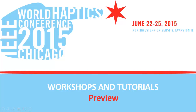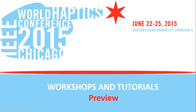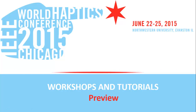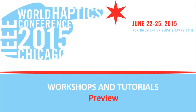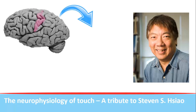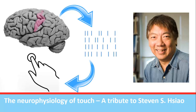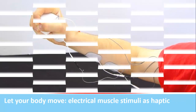This video contains details of workshops and tutorials selected for the IEEE World Haptics Conference 2015, which will take place in Evanston on June 22nd. In the Neurophysiology of Touch, a tribute to Stephen S. Xiao workshop, an international group of neuroscientists will discuss their work investigating the sense of touch and its neural basis.